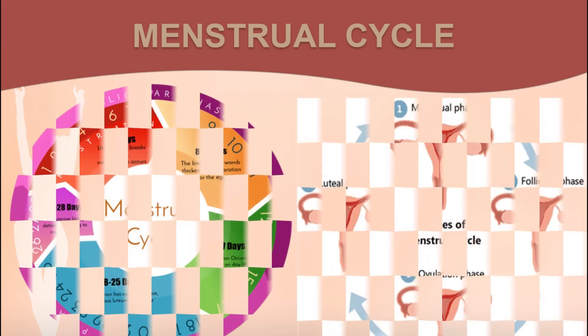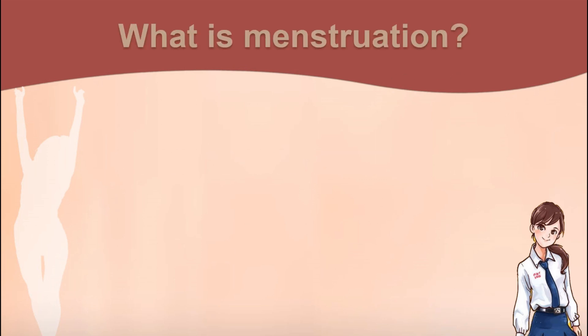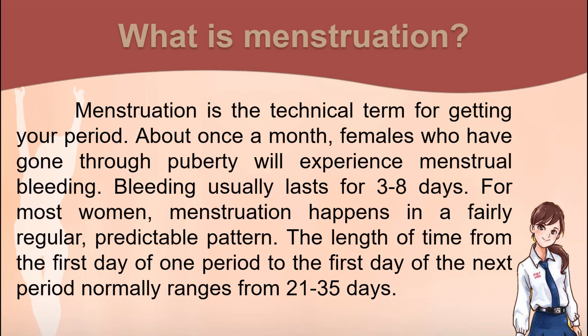The Menstrual Cycle. Before we start, let's define what menstruation is. Menstruation is the technical term for getting your period. About once a month, females who have gone through puberty will experience menstrual bleeding. Bleeding usually lasts for 3 to 8 days. For most women, menstruation happens in a fairly regular, predictable manner. The length of time from the first day of one period to the first day of the next normally ranges from 21 to 35 days.